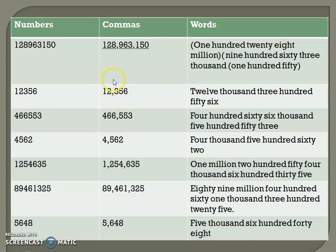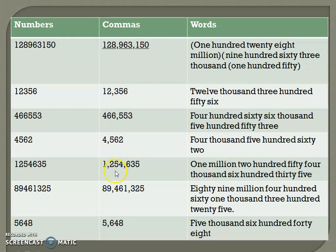This number has five digits and is divided into two periods — 12 is in the thousands period: twelve thousand three hundred fifty-six. Another example has six digits and is divided into two periods — thousands and ones: four hundred sixty-six thousand, five hundred fifty-three. Then: four thousand five hundred sixty-two. Another example has seven digits and is divided into three periods — millions, thousands, and ones.